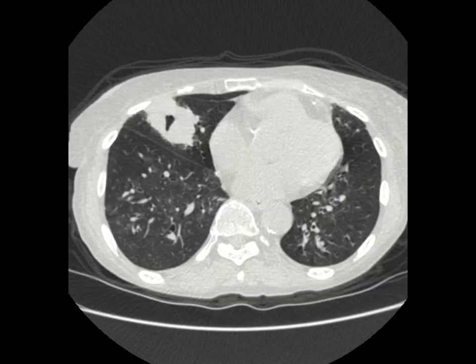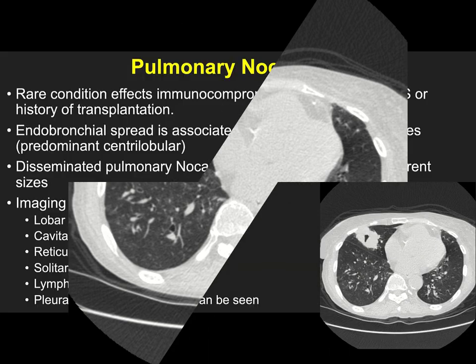To summarize: cavitary nodule in the right middle lobe with additional nodular opacities in the bilateral lungs. The differential highly favored an infectious etiology given the patient's history. Bronchoscopy was performed, and the diagnosis in this case was pulmonary nocardiosis.